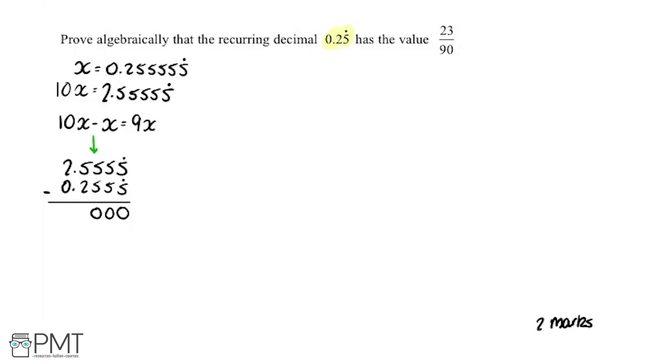If you subtract all these fives from all these fives, you just get a zero. Same here, zero, zero. We're going to take two away from five to get three, and we're going to put the decimal point in the same place. We're left with two take away zero and we're left with two.